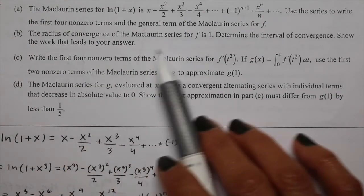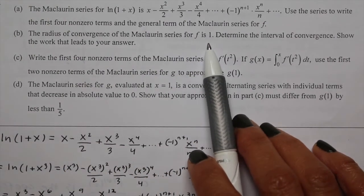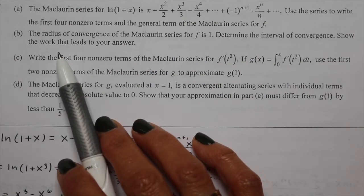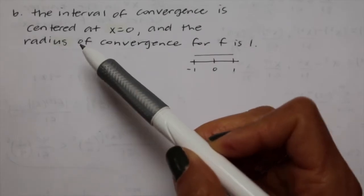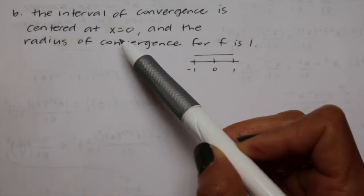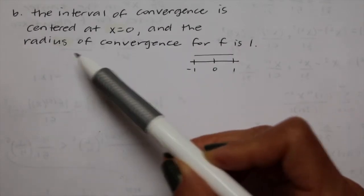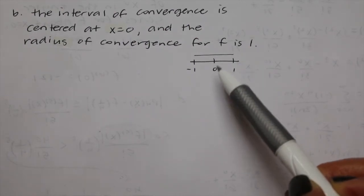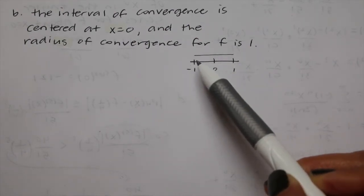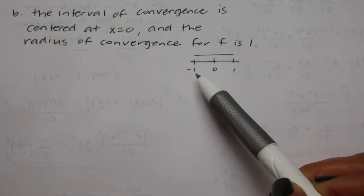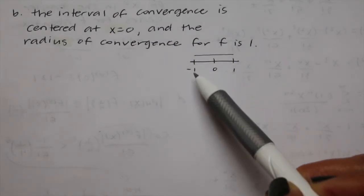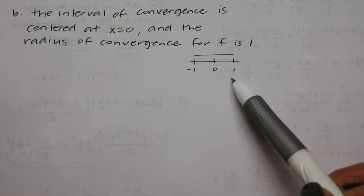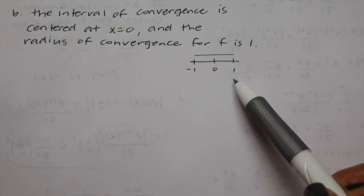Part b says the radius of convergence of the McLaurin series for f is given as 1. Determine the interval of convergence and show work. The interval is centered at 0, and with radius of convergence 1, we go out 1 in both directions, giving an interval from negative 1 to 1. We need to check whether the series is convergent or divergent at the endpoints negative 1 and 1.